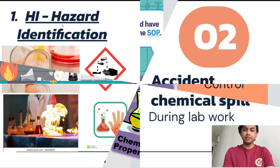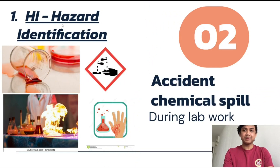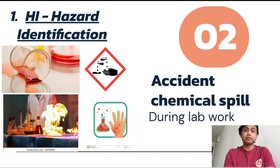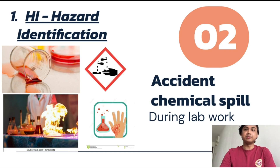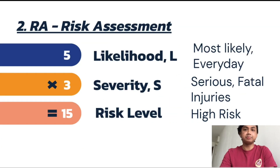Another hazard identification you face when working in a chemical lab is accidental chemical spill. Working in a chemical lab, we will be involved in a lot of chemical transfer, and most of them can be really high in toxicity. So the likelihood that a chemical spill will happen is 5, because we're doing a lot of chemical transfer.